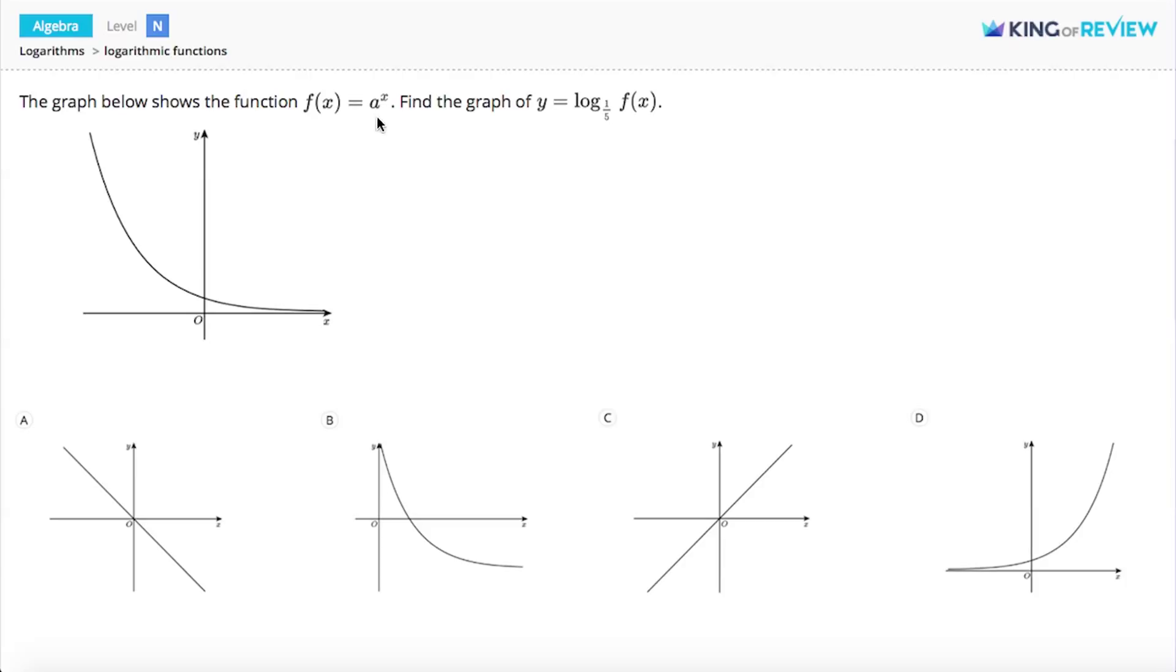The first thing I notice is that this function is decreasing. If an exponential function is decreasing, that means the base a has to be in between 0 and 1.